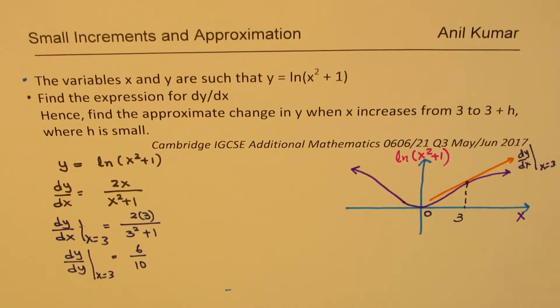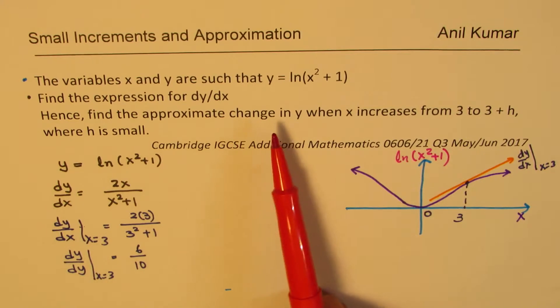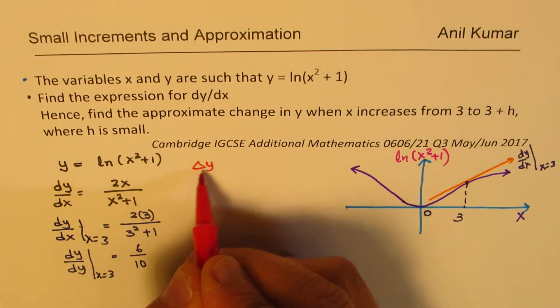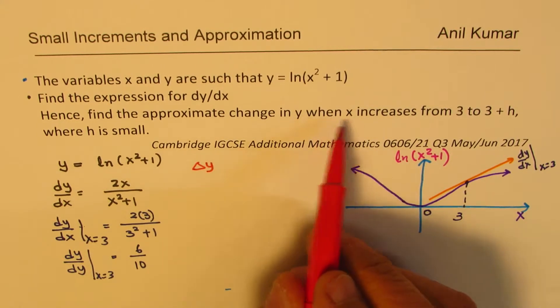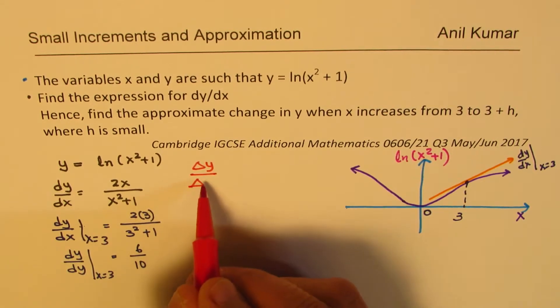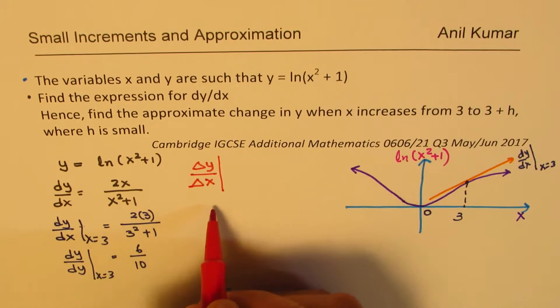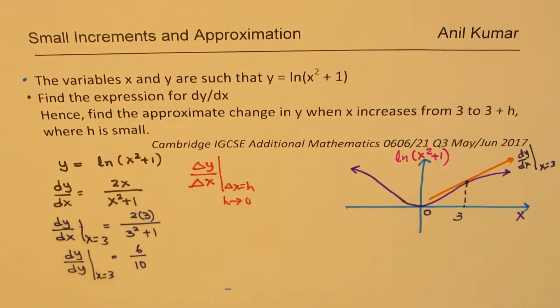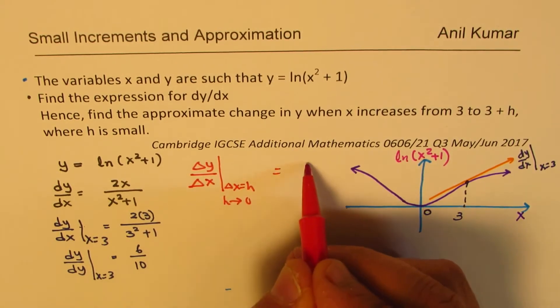When we say that we want to find approximate change in y, that means we really want delta y, approximate change in y when x increases by h. We are basically interested in delta y over delta x when delta x is equal to h and h is approaching 0.